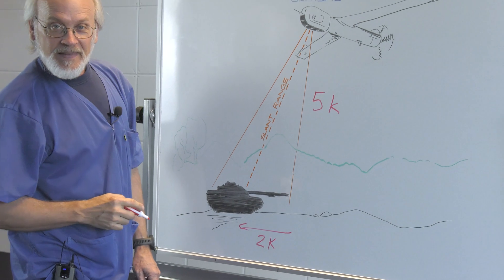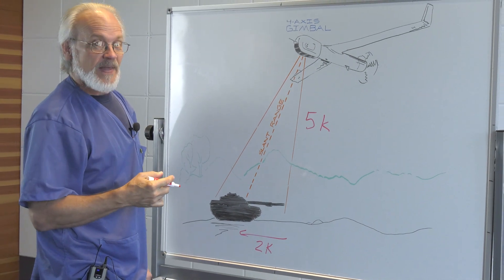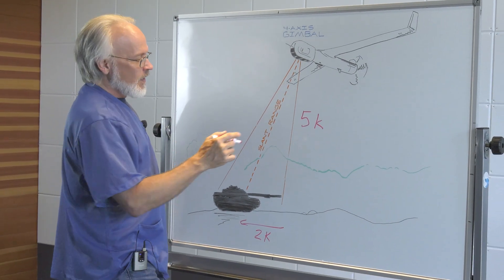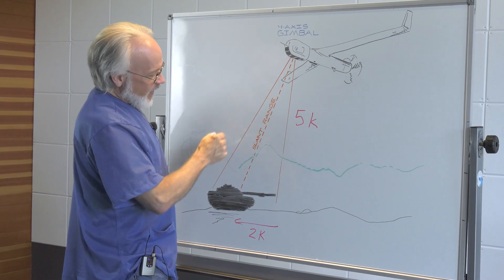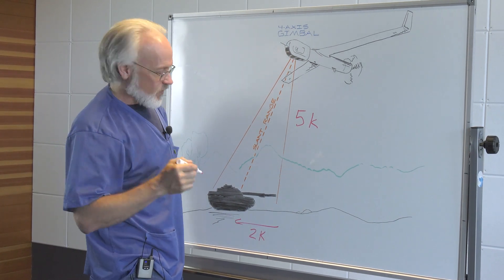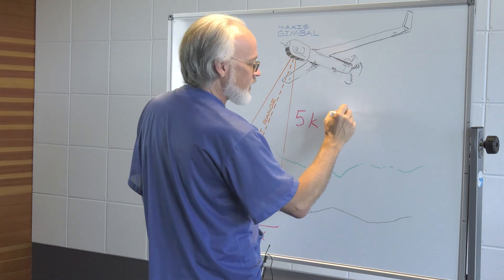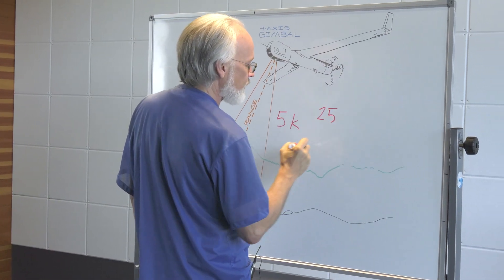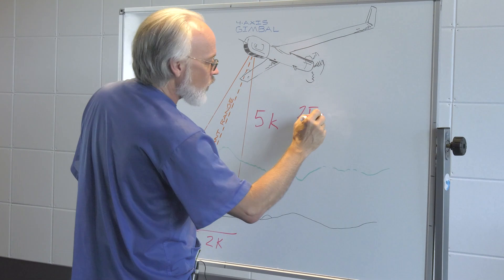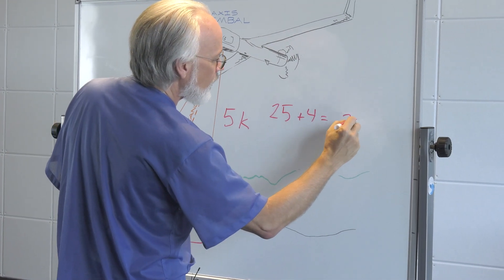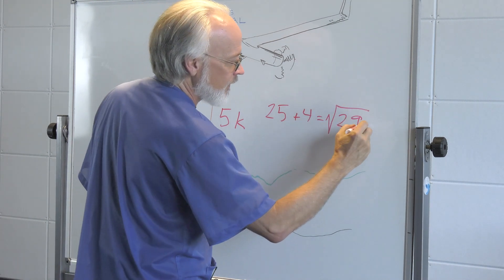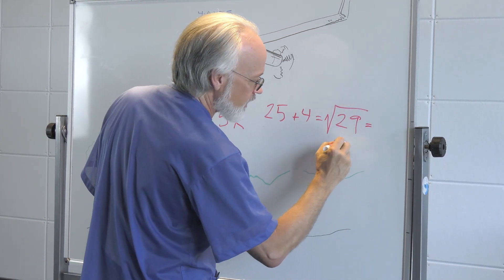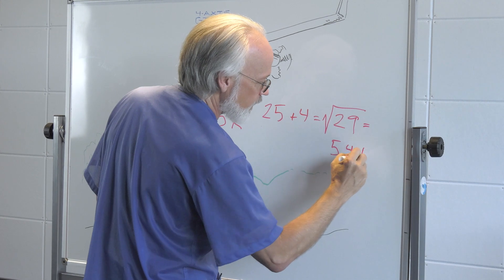That is a right triangle, and going back to our Pythagorean theorem and our geometry, we'll square a squared plus b squared, and we'll find the slant range c squared. So if we take 5 squared, that's 25. 2 squared is 4, that's 29, and then we have to take the square root of that, and I happen to know that the square root of that is about 5.4.